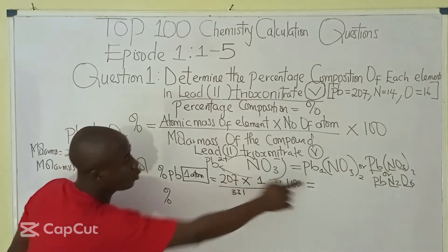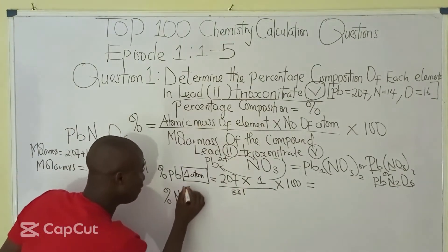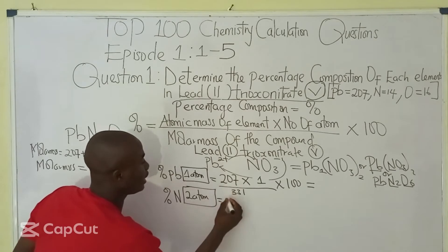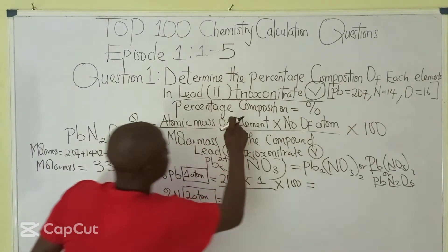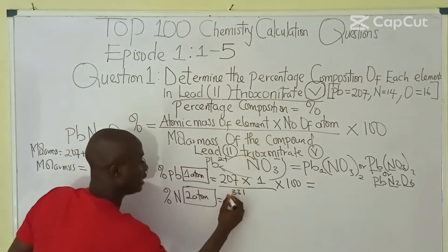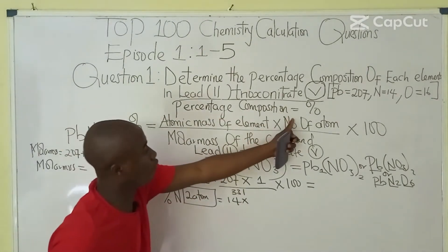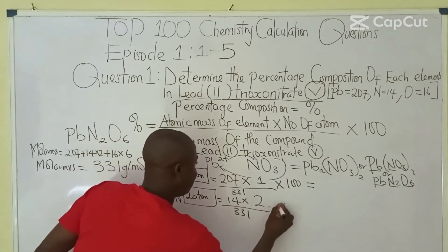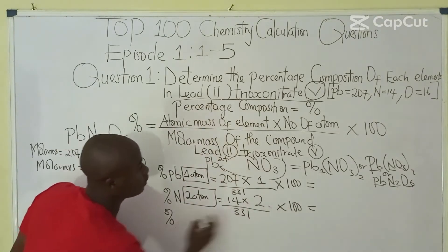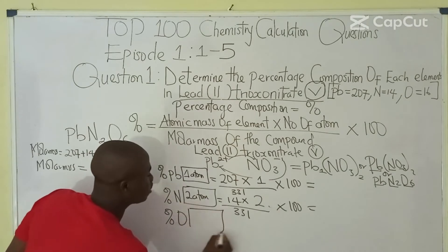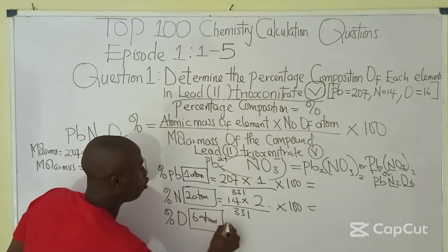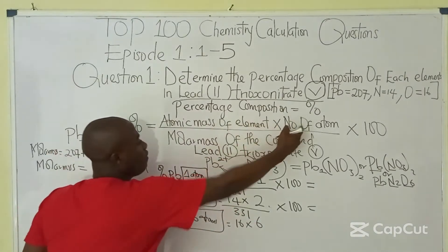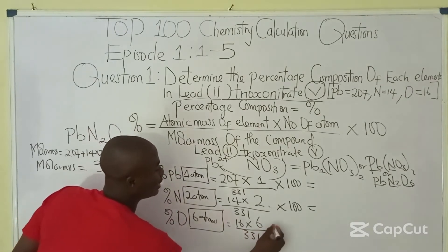Next is the percentage composition of nitrogen (N). We have 2 atoms of nitrogen. So it becomes: atomic mass of nitrogen, which is 14, times 2, over 331, times 100. Lastly, percentage composition of oxygen: we have 6 atoms, so it becomes 16 times 6, over 331, times 100.